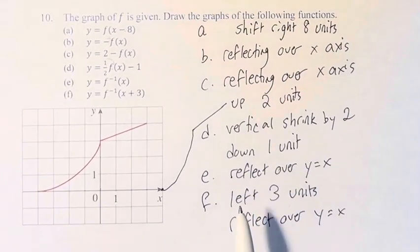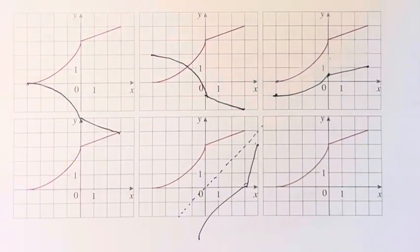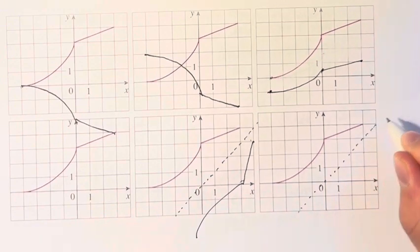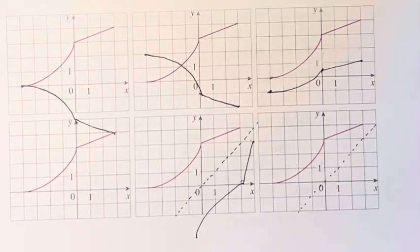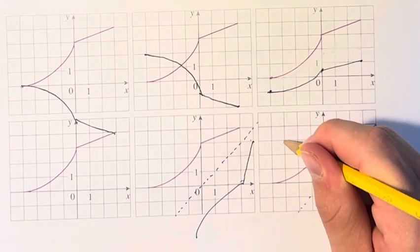Finally, for part F, we have to go left 3 units and then reflect over the line. Here we still have the line y equals x, but we've moved the function 3 units to the left. This is going to be an intermediate function.